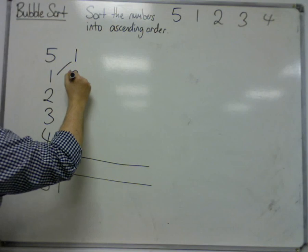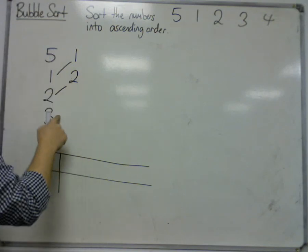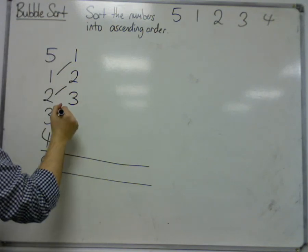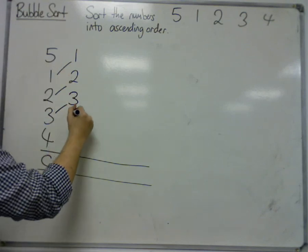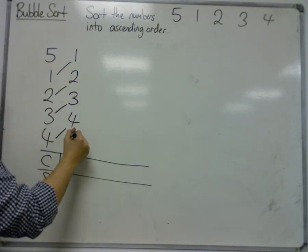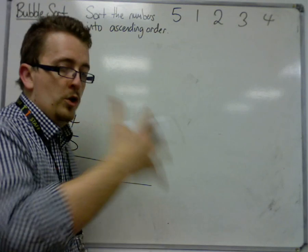Then 5 and 2, they're in the wrong order, so 2 gets swapped. 5 and 3, they're in the wrong order, so 3 gets swapped. 5 and 4 are in the wrong order, so 4 gets swapped, and the 5 has been pushed down to the bottom.